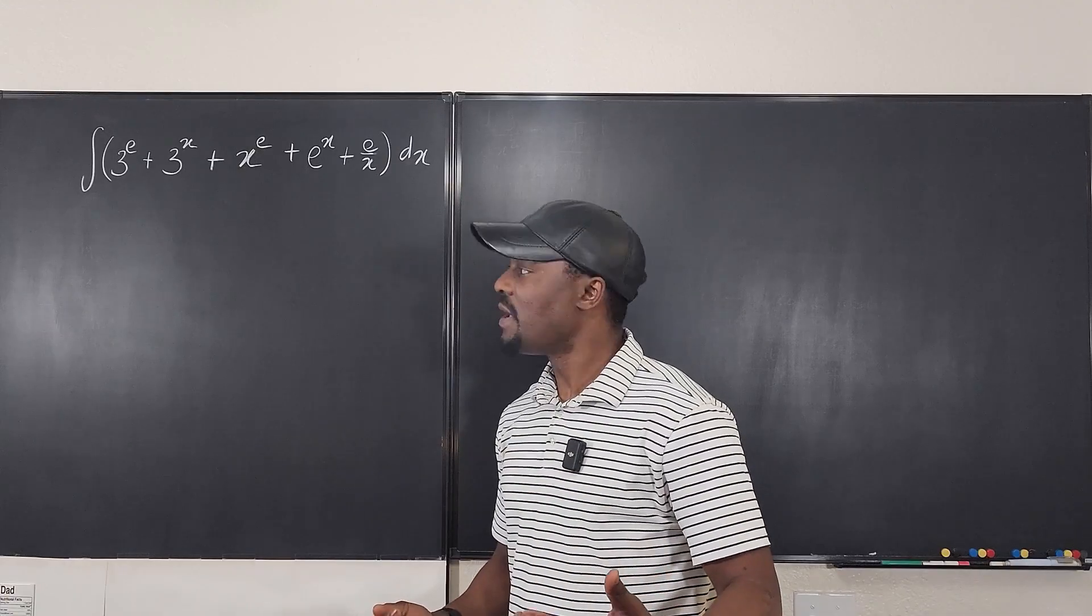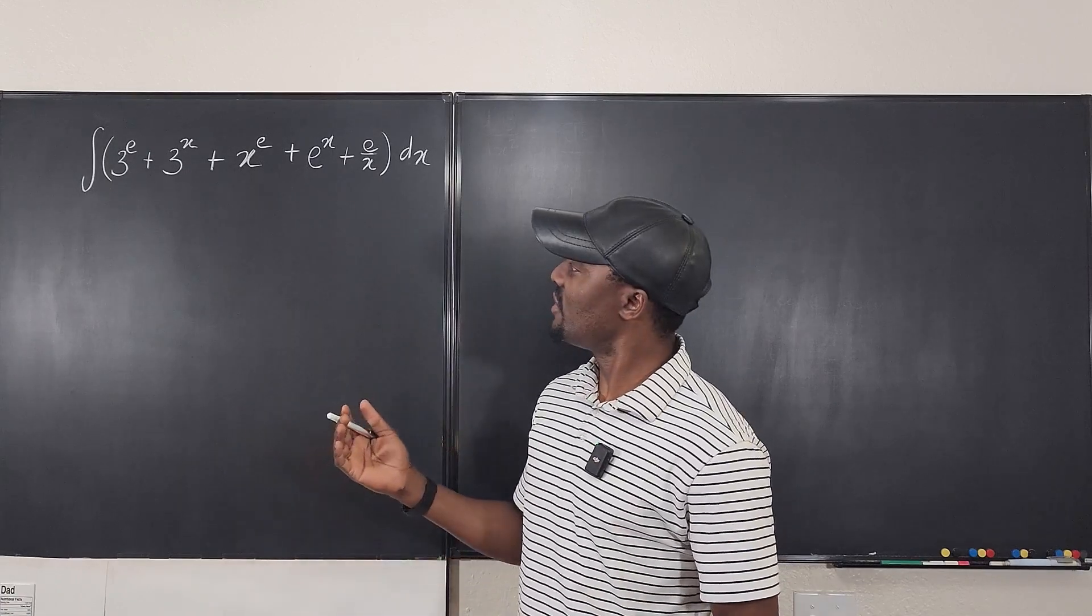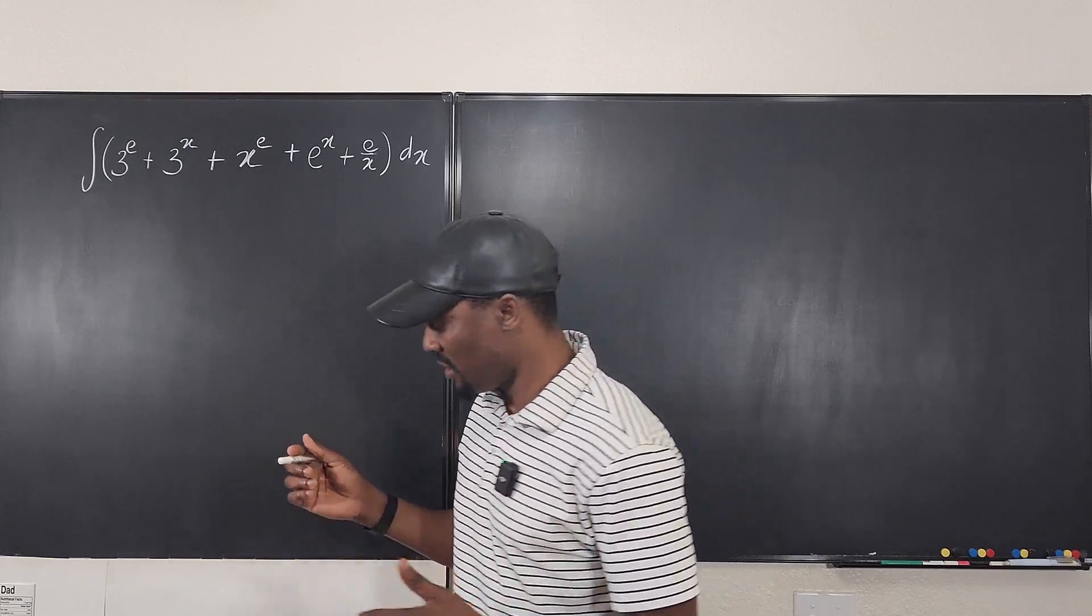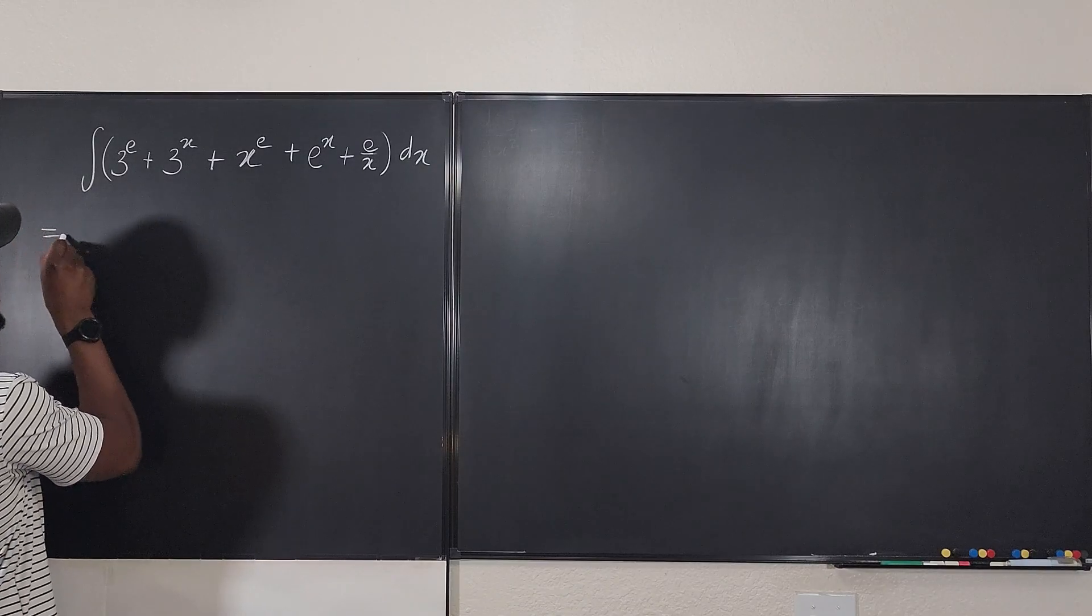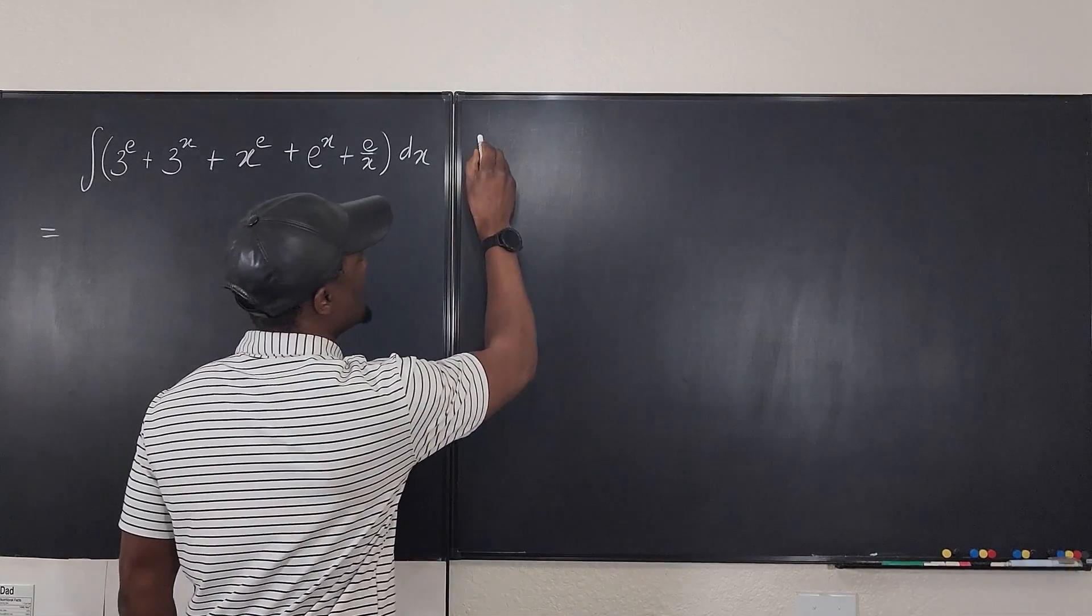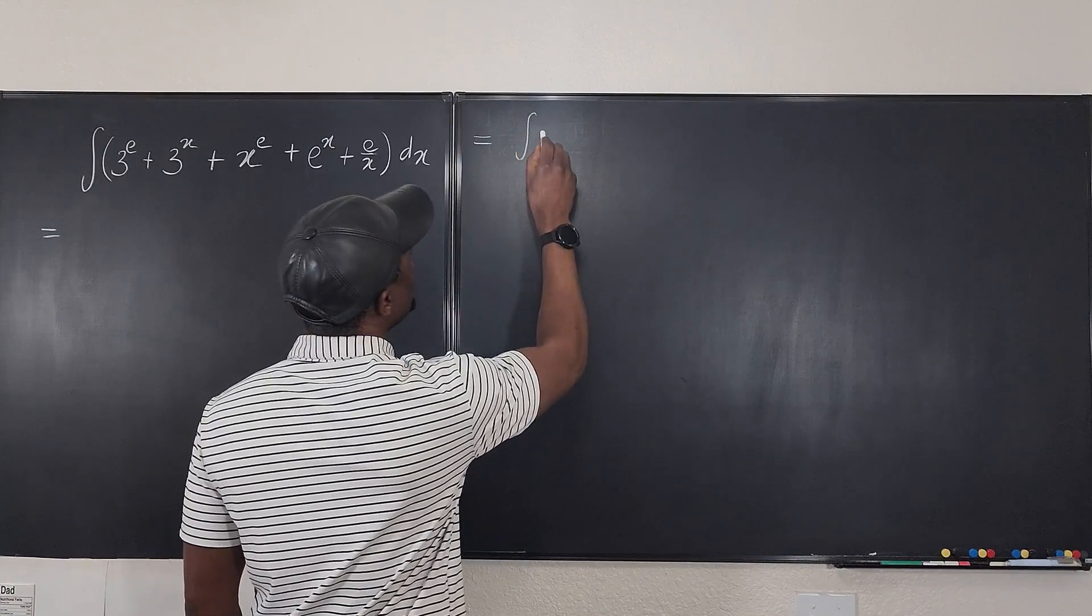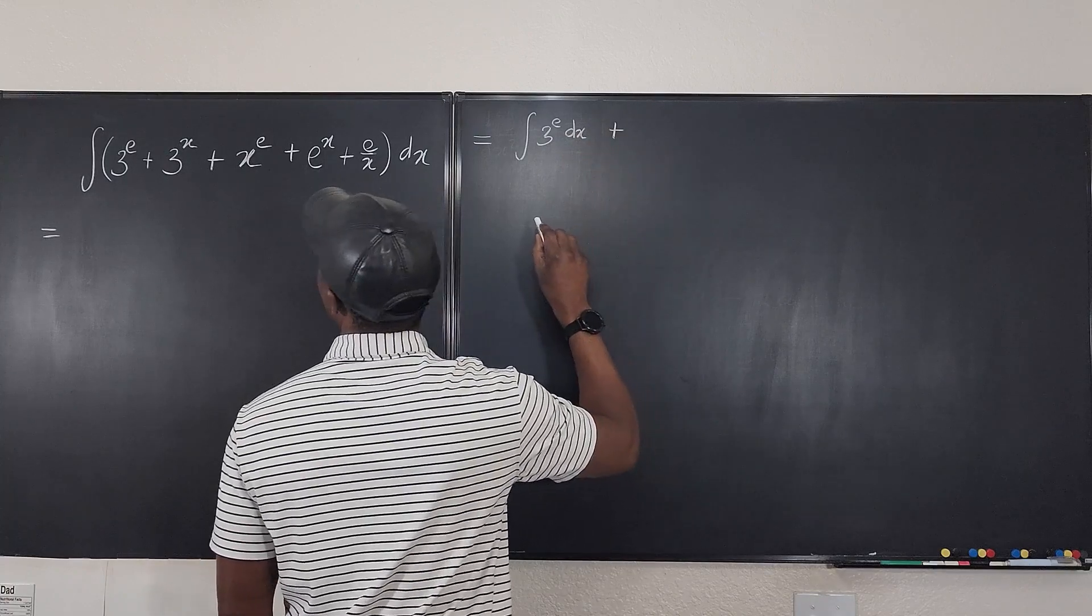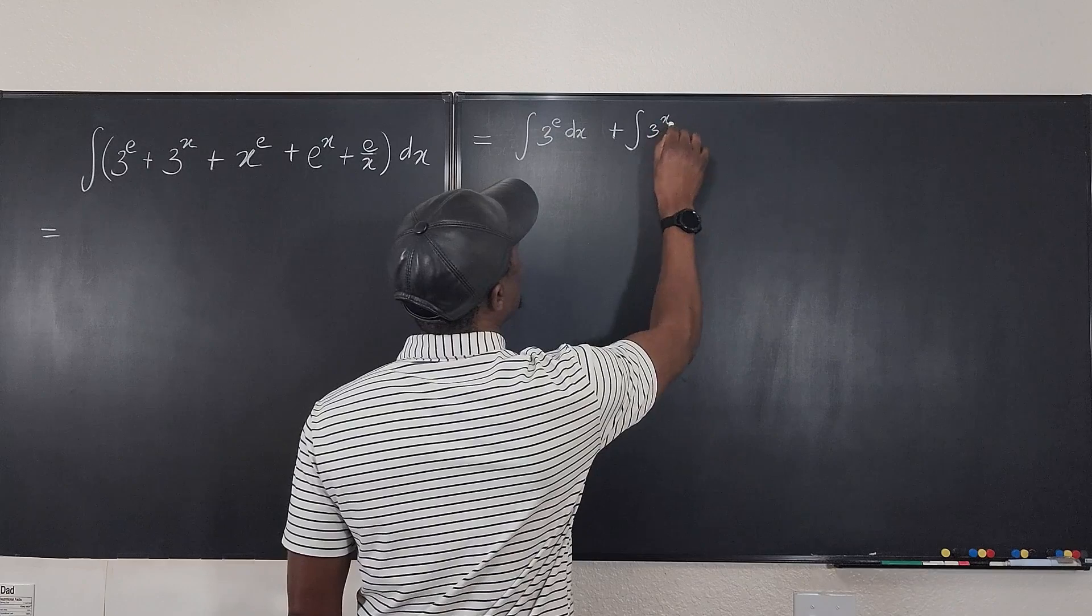So the first thing you do is you split this into bits because there is no need to do any combination since it's already in small parts. Fundamental theorem of calculus, we know that this is the same thing as, let's write it here. We know that this is the same thing as the integral of 3 to the e dx, plus we have the integral of 3 to the x dx.